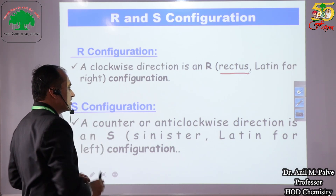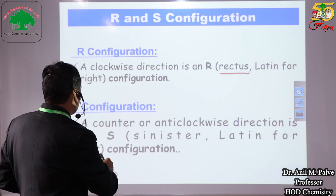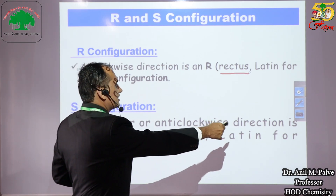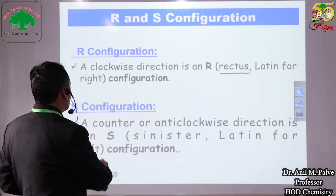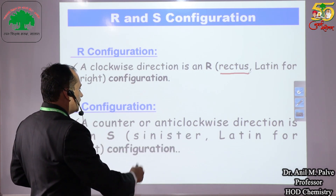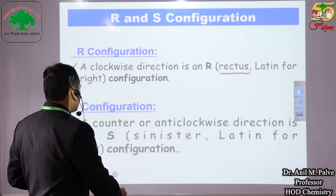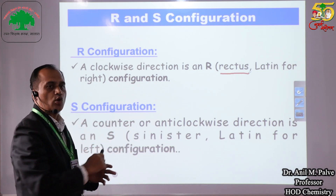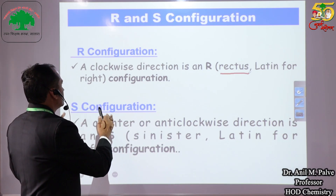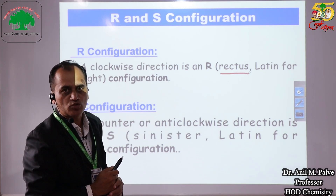While if you look towards the S configuration, a counter or anti-clockwise direction is known as S. In Latin, that is sinister, which means anti-clockwise direction. So this is the main basic difference between R and S configuration.